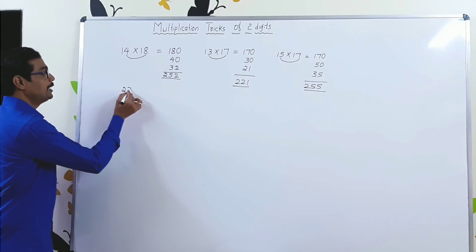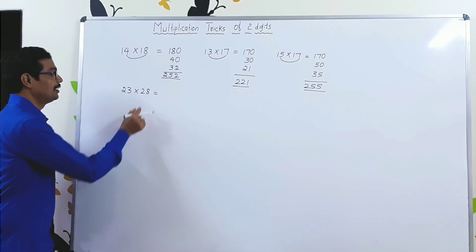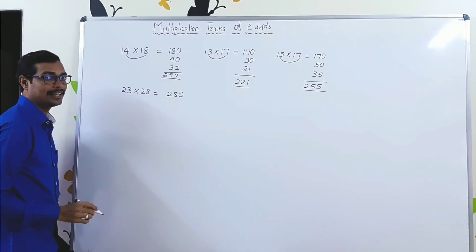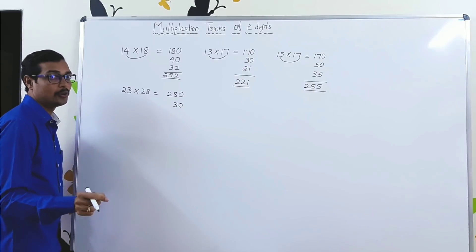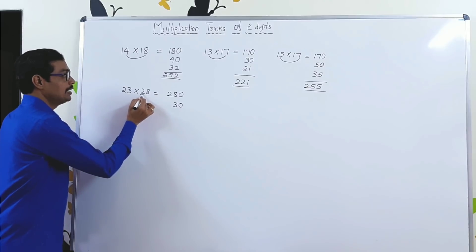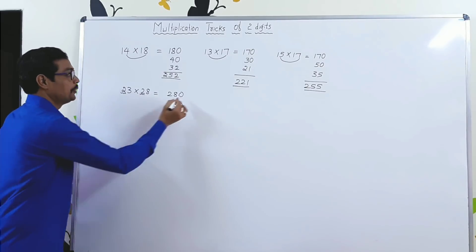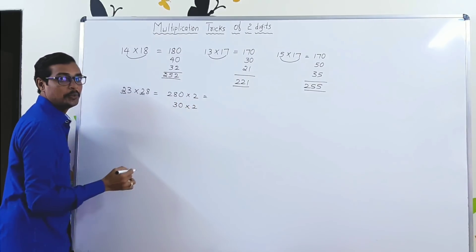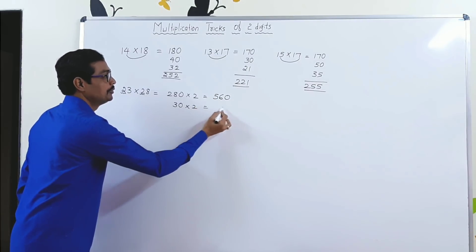Now, 23 × 28. 28, write it as 280. 3, write it as 30. But do observe. Here in tens place, 2 is there. So we need to multiply by 2. 280 × 2 is 560. 30 × 2 is 60.